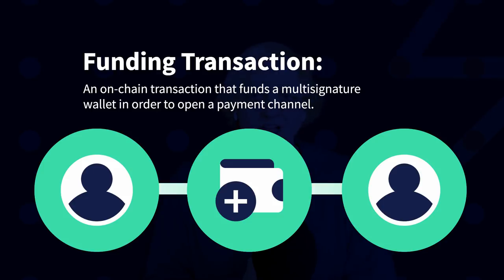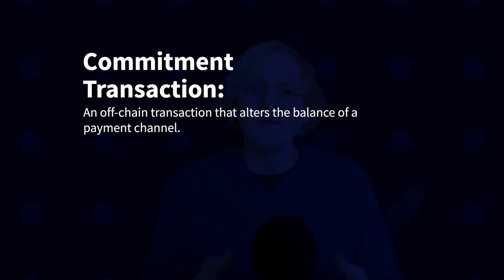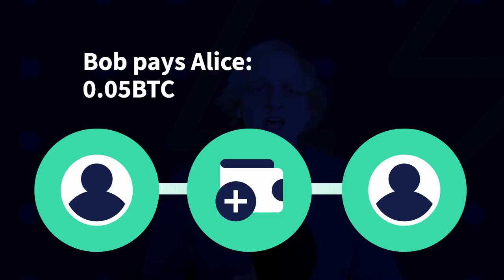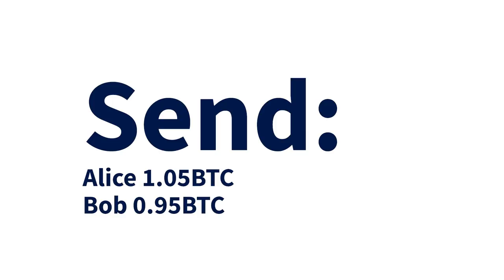Alice and Bob open up a payment channel by depositing one Bitcoin each into a common multi-signature wallet using a normal on-chain transaction — this is called a funding transaction, and it's how you open a payment channel. Anytime one of them needs to pay the other, they exchange a type of IOU called a commitment transaction. Commitment transactions don't get broadcast to the Bitcoin network and don't get added to the blockchain. For example, if Bob pays Alice 0.05 Bitcoin, they both start with a balance of one Bitcoin each. They create a commitment transaction reflecting the new channel balance, both sign it — since it's a multi-signature wallet requiring both signatures — exchange it, and each store a copy. The commitment transaction stipulates: send Alice 1.05 Bitcoin, send Bob 0.95 Bitcoin. Notice that the amounts reflect the current total channel balance, not just the 0.05 Bitcoin Bob is sending.